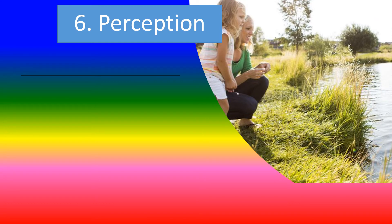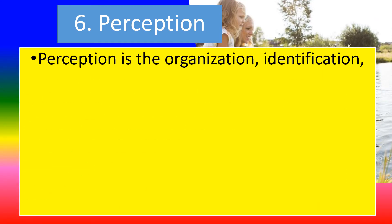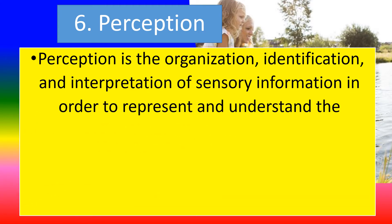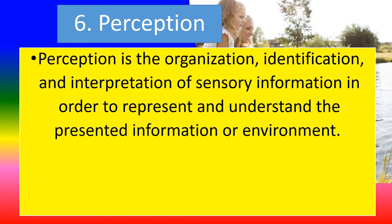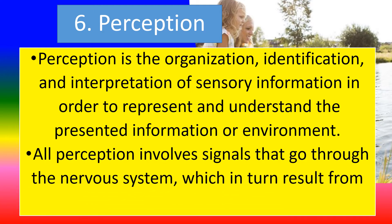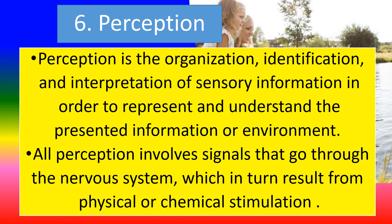Six, perception. Perception is the recognition, identification, and interpretation of sensory information in order to represent and understand the presented information or environment. All perception involves signals that go through the neural or nervous system, which in turn result from physical or chemical stimulation.